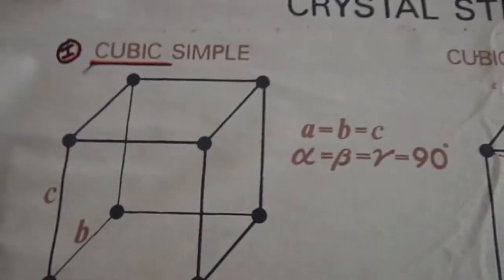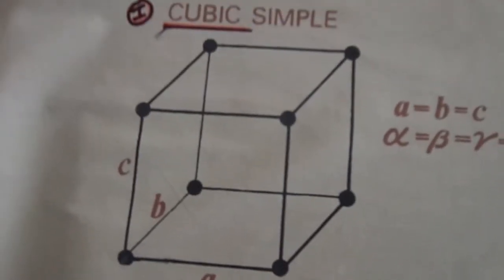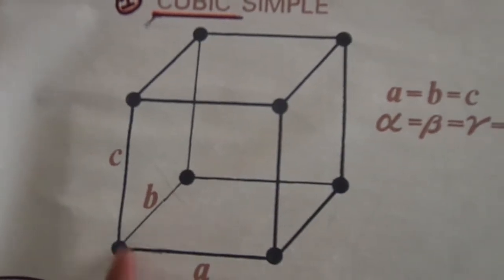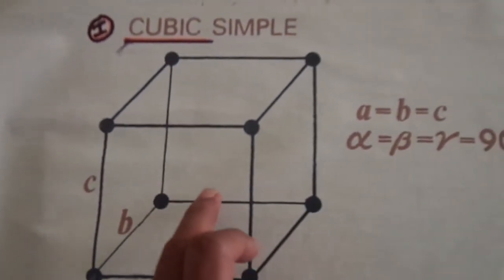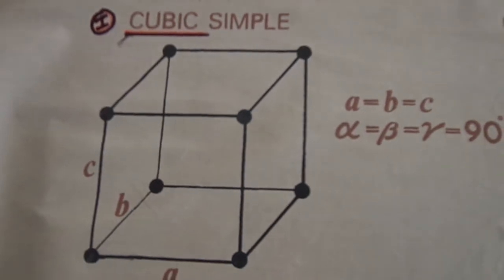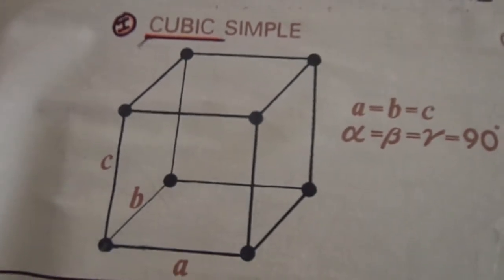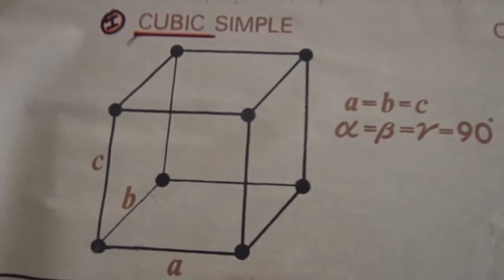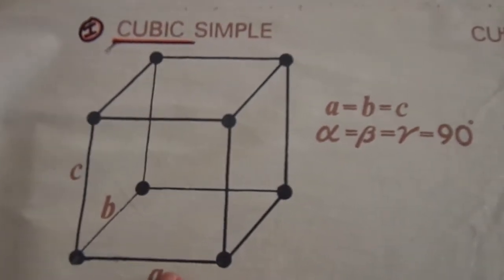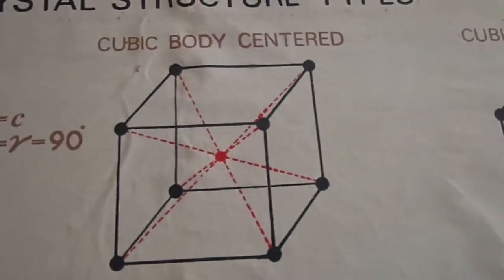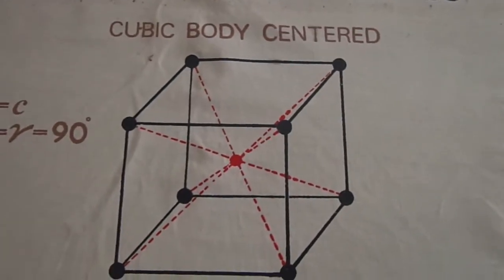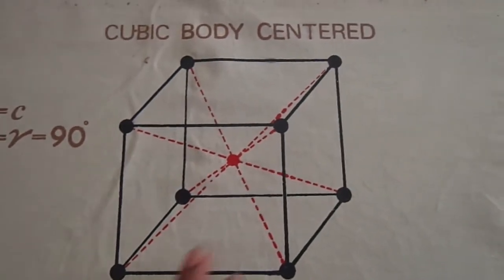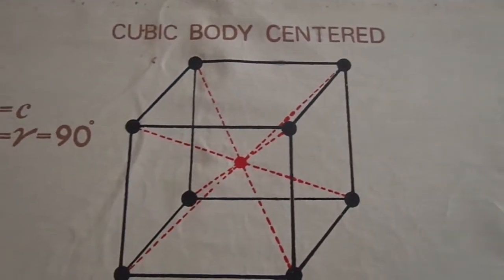In the first case, it is simple cubic — meaning only corner atoms are present, with one eighth of an atom in each corner, giving only one atom inside the unit cell. It also happens to be a primitive cell. Moving on to the body-centered cubic structure: in addition to the corner atoms, one full atom is present inside the box.